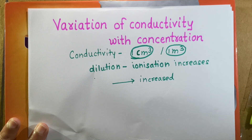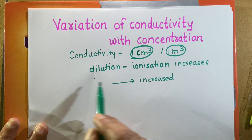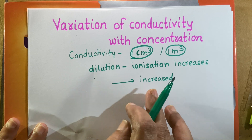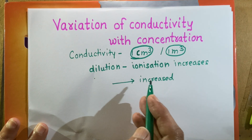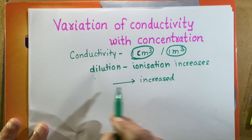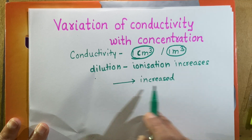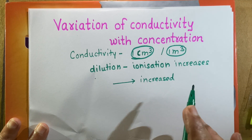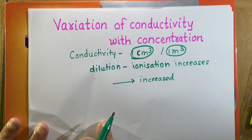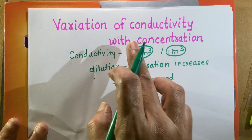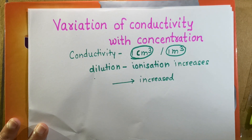But remember here, if we dilute the solution, the number of ions are increased. However, the proportion of increase in number of ions and the dilution is not the same. And so, here we have to consider how conductivity actually changes with change in concentration.